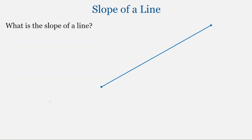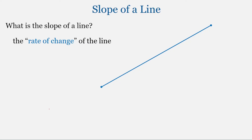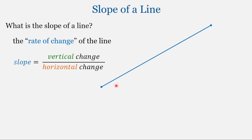So what is the slope of a line? The slope is the rate of change of the line. The rate of change is the ratio of two things that are changing — specifically, the vertical and the horizontal positions of the line.